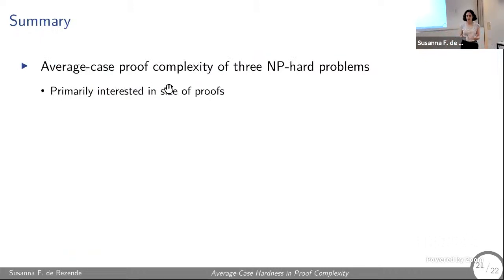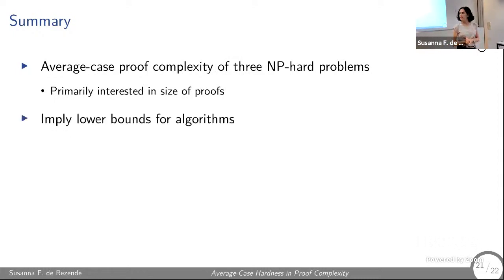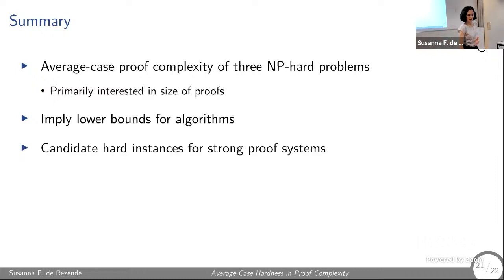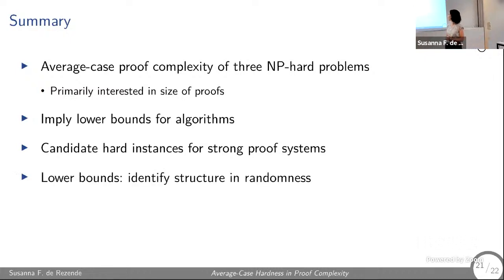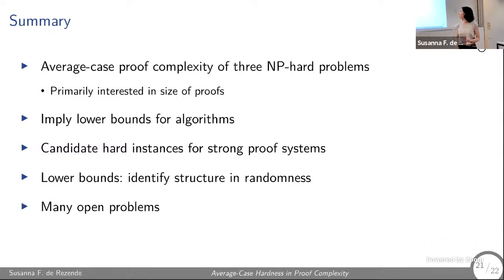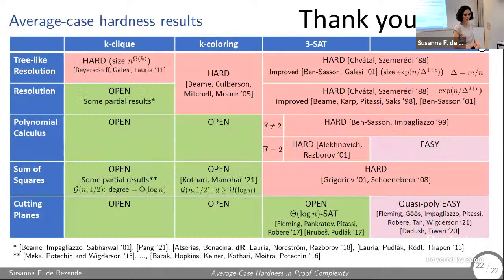In summary: we studied average-case proof complexity of three NP-hard problems. We're usually interested in proof size, though width and degree lower bounds are also interesting and often imply size lower bounds. These proof lower bounds imply lower bounds for algorithms — for example, resolution lower bounds imply lower bounds for SAT solvers based on resolution. These are good hard instances for strong proof systems, and lower bounds typically reduce to identifying combinatorial structure in random instances. Many open problems remain.